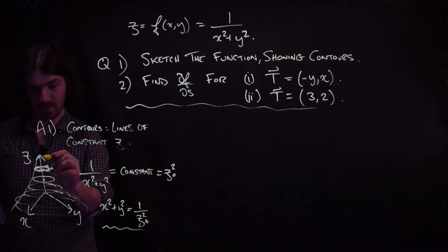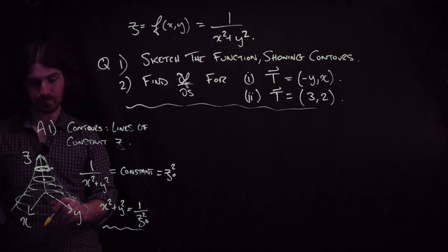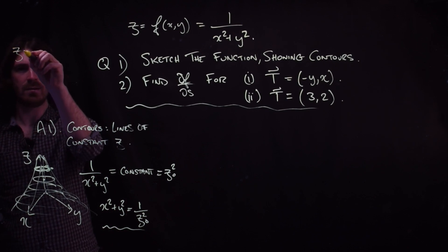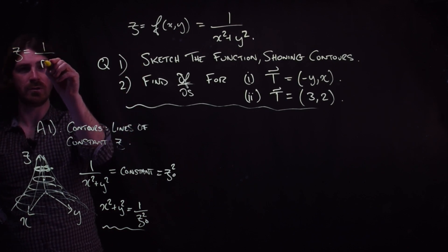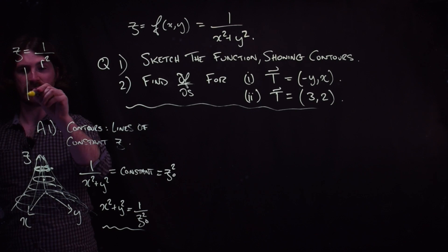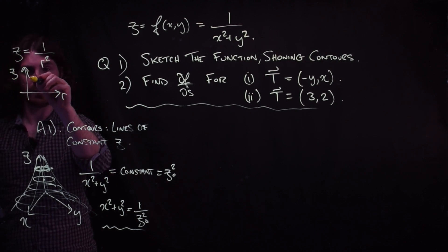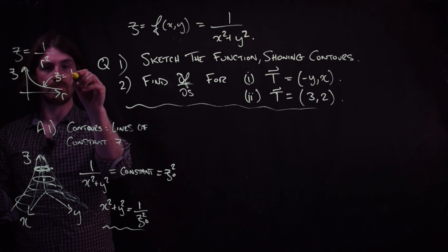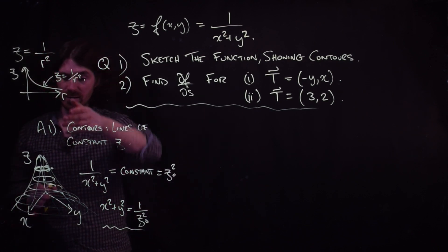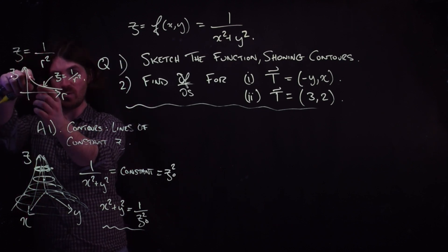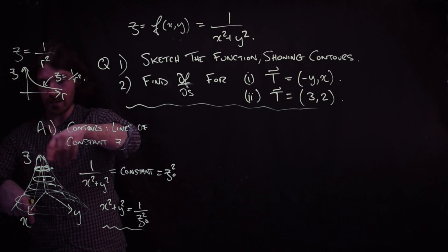So your function looks something like this. We could also see this by thinking of z equaling 1 over r squared, where r is the radius of the circle x squared plus y squared. We could just draw the curve z versus r, and this is 1 over r squared. It's symmetrical about the z-axis, so we just rotate this curve around the z-axis and we get this shape.